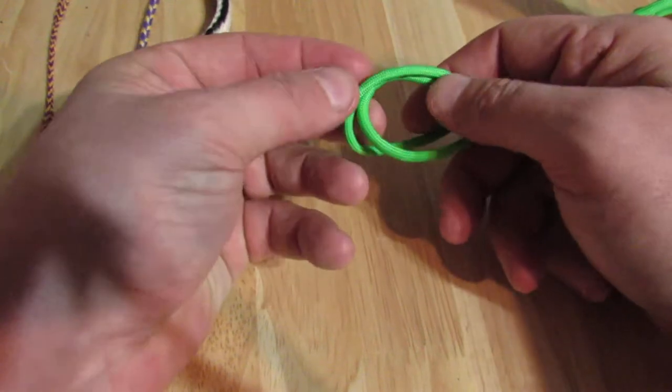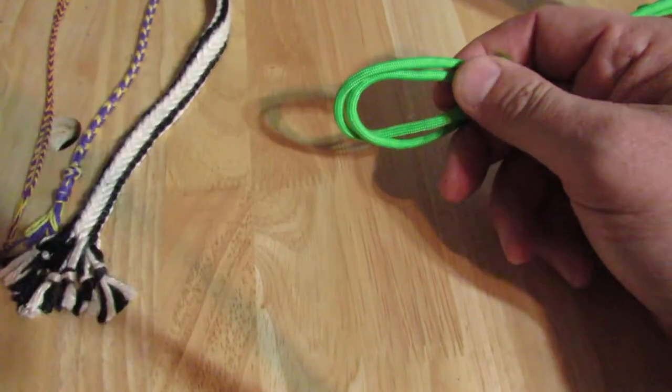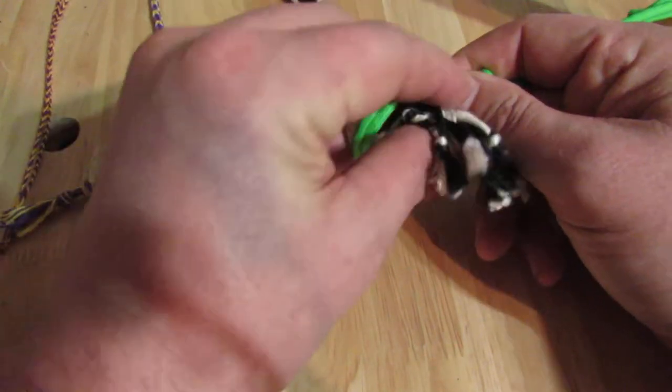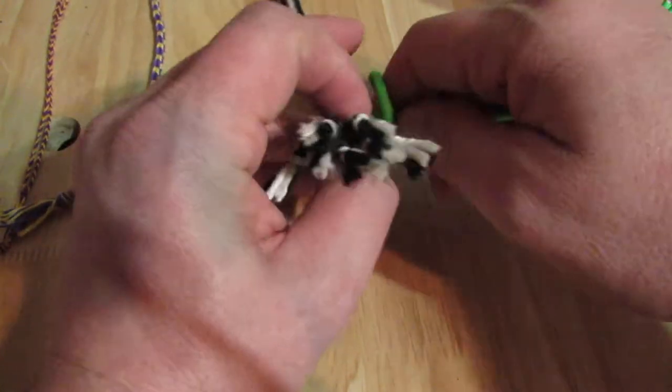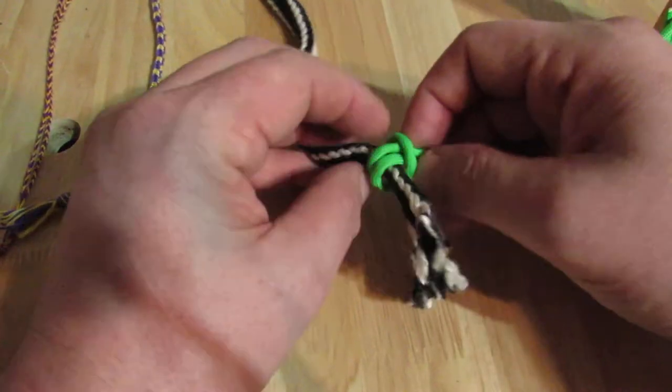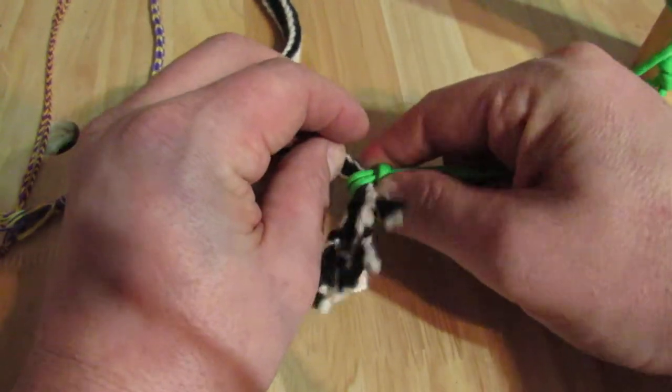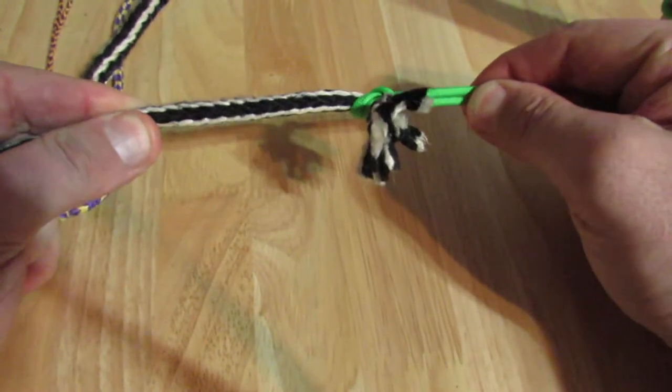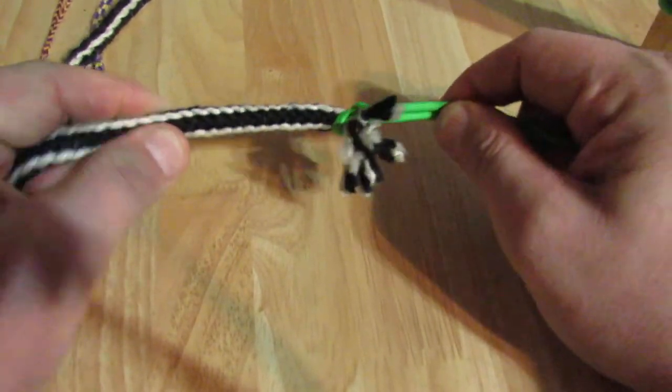And so it is here where you're going to take the end of your braid. These are already complete but they'll show you. All you do is just pull this tight and it'll grab at the end of your braid.